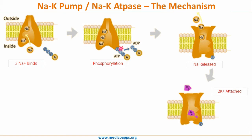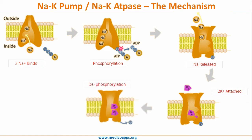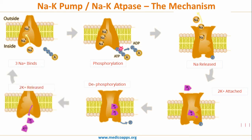The attachment of potassium leads to dephosphorylation of the channel. The dephosphorylated state has poor affinity for potassium, which is now released inside the cell. The dephosphorylated state has high affinity for sodium, which then attaches itself to the inner side of the alpha subunit to continue the cycle. This completes the sodium potassium ATPase cycle.